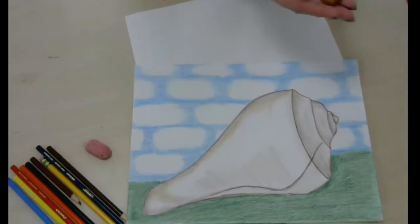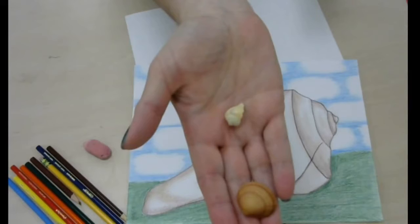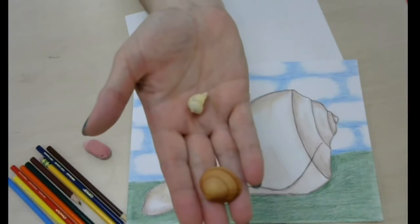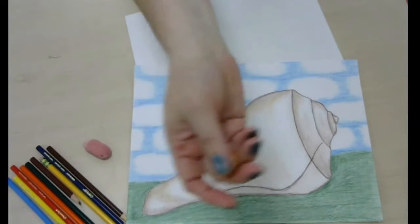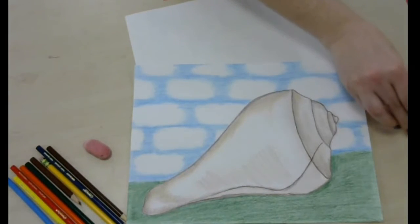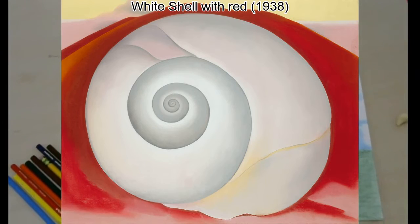Next is a shell picture. It's a snail shell, so in real life, it was probably only about the size of these shells. But this is white shell with red. It's almost as big as the New York Street painting.